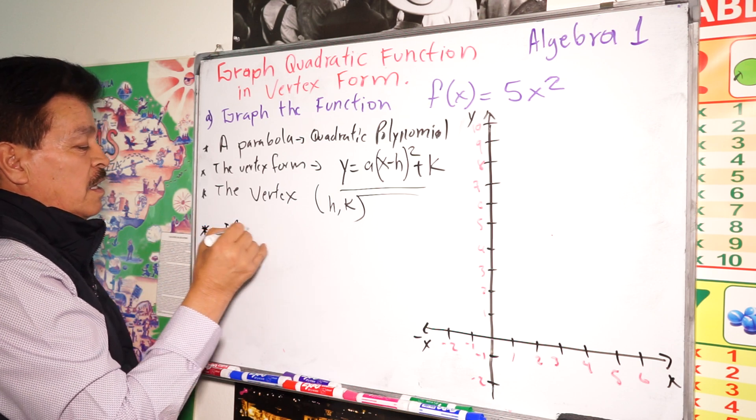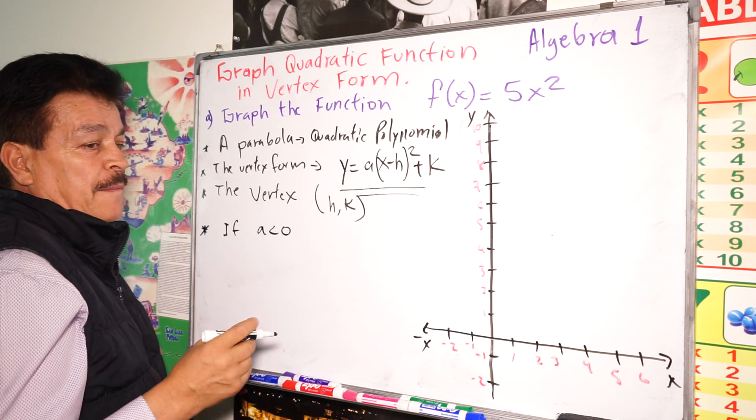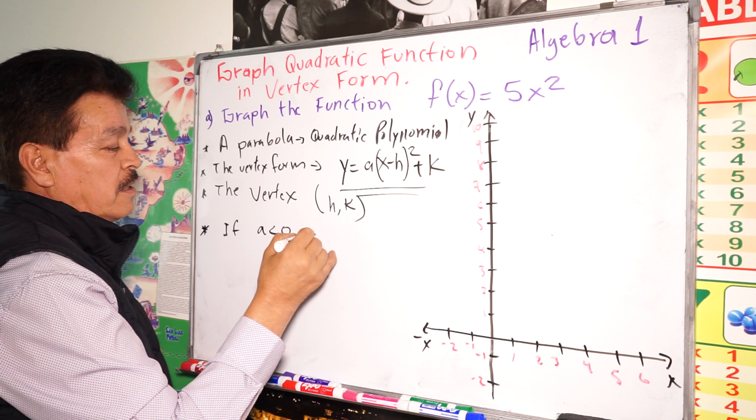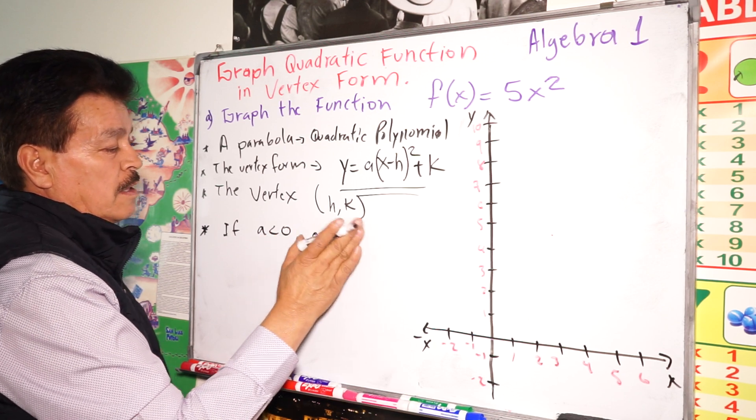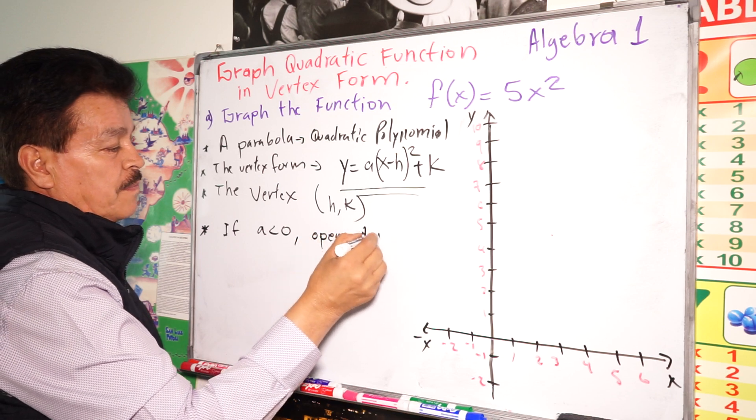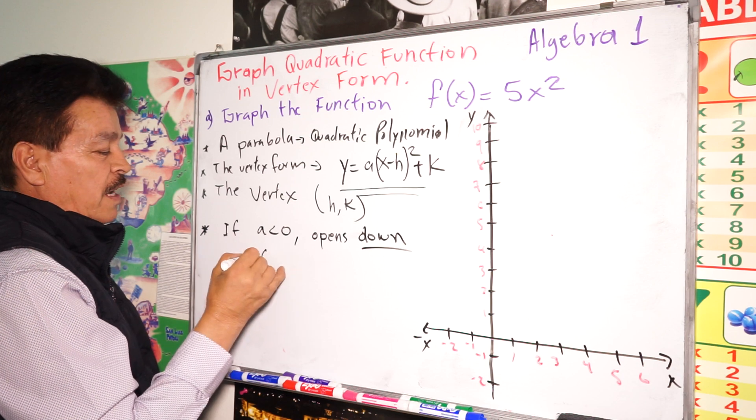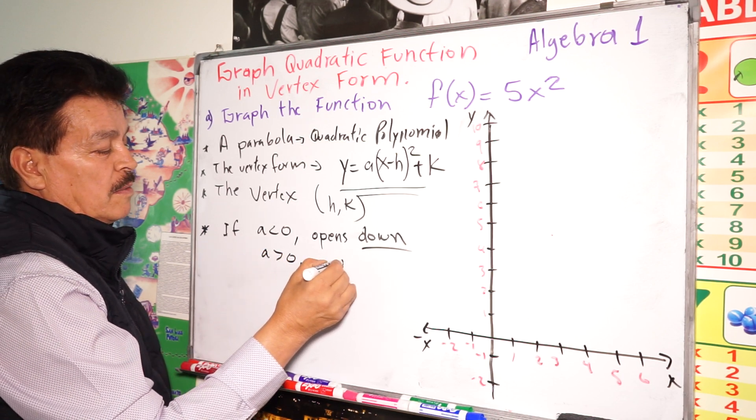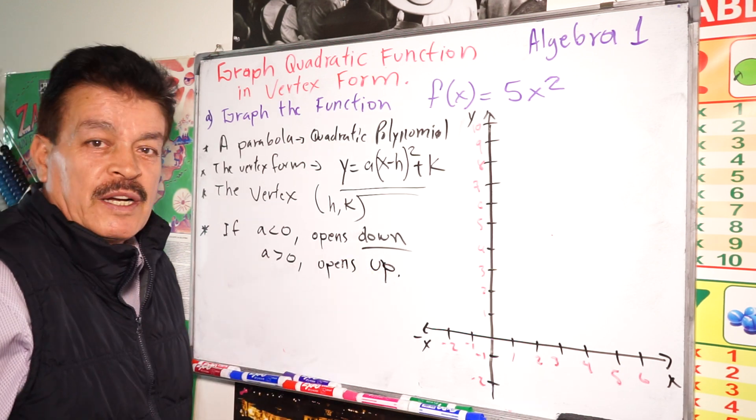If a is less than zero, the parabola opens down. When a is less than zero, it opens down. If a is greater than zero, then it opens up. This is very important.